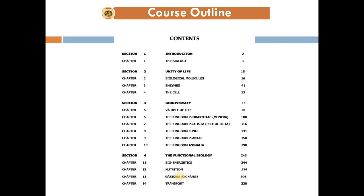Chapter 13 covers gases and the exchange of respiratory gases between organisms and the environment. Chapter 14 covers transport in plants and animals — including how water and minerals are absorbed from the soil, how organic food is transported in plants, and the lymphatic system and blood circulatory system in animals.